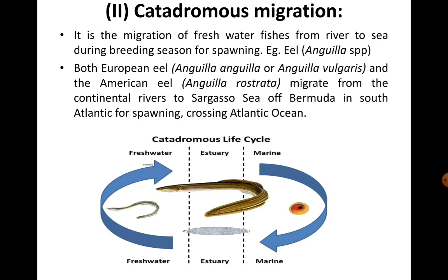The next type of migration is catadromous migration. Here, the migration is from fresh water — fresh water fishes migrate from river to sea during breeding season for spawning. An example is the eel, or the Anguilla species. Both the European eel Anguilla anguilla (or Anguilla vulgaris) and the American eel Anguilla rostrata migrate from continental rivers to the Sargasso Sea of Bermuda in the South Atlantic for spawning, crossing the whole of the Atlantic Ocean.